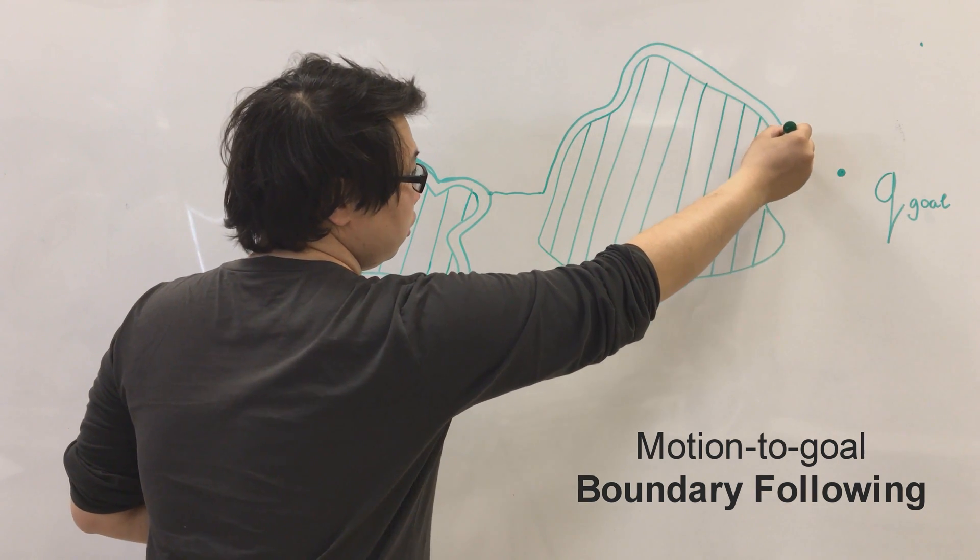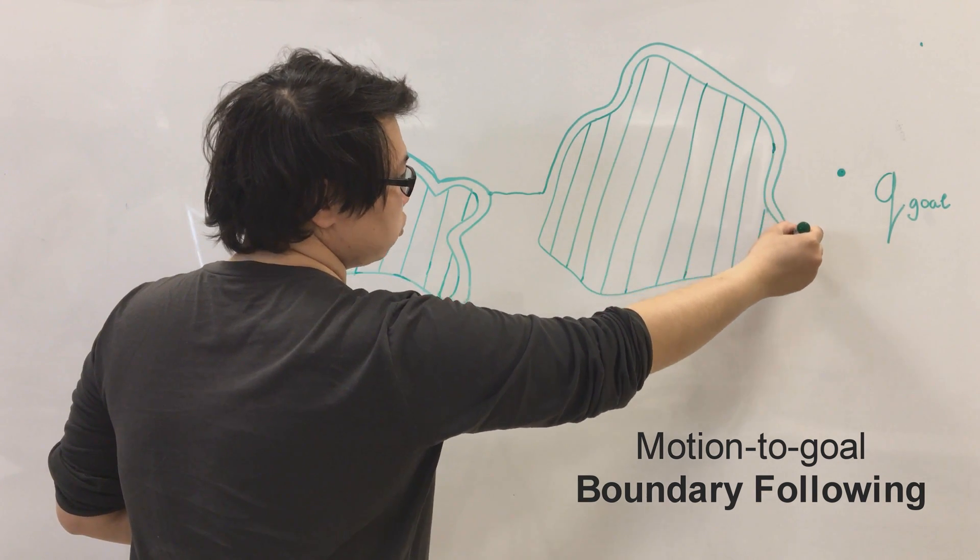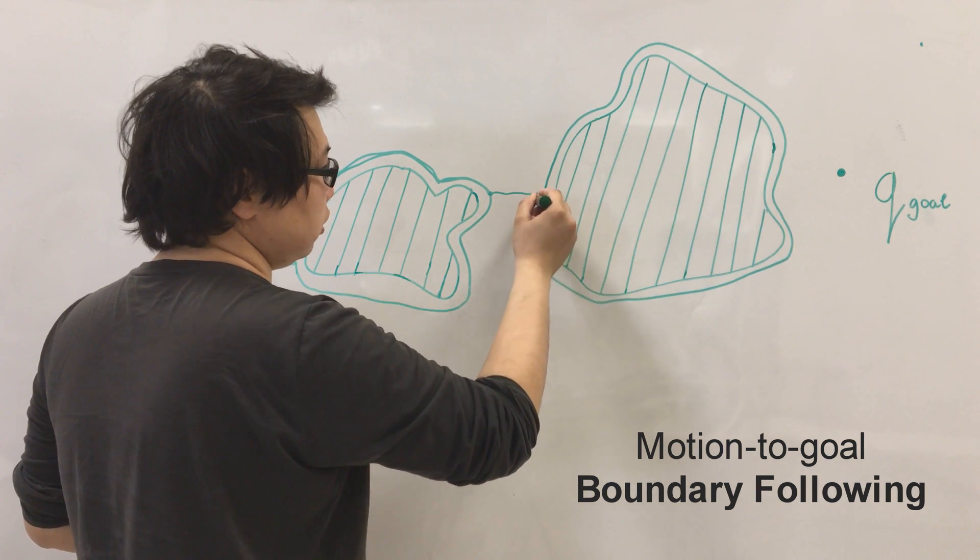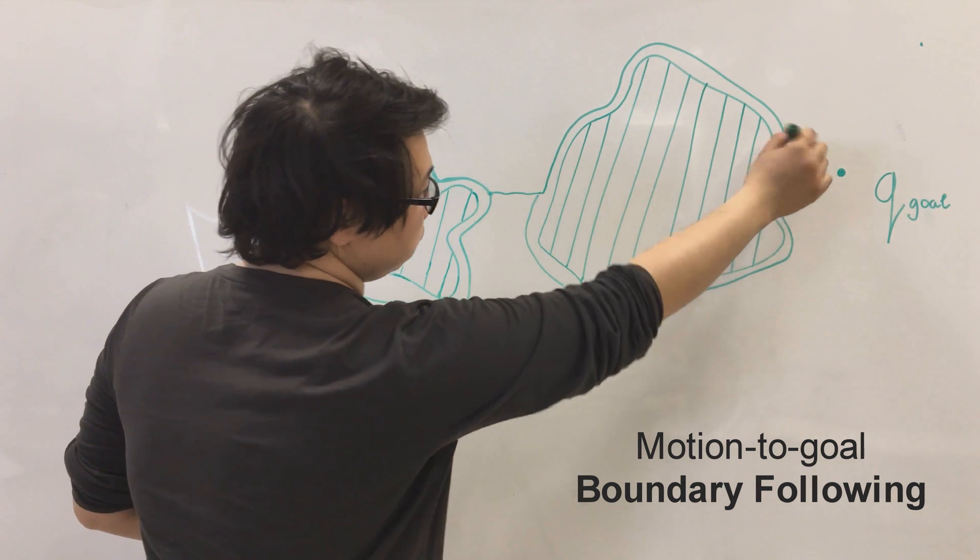Every time we go around the obstacle we have to calculate the distance towards the goal. Here the nearest point was here.